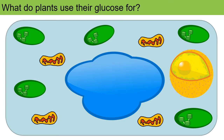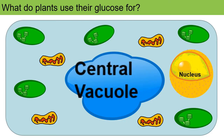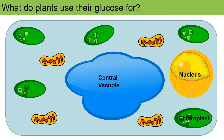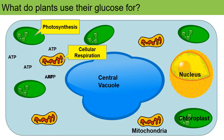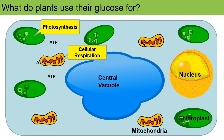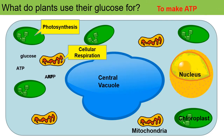What do plants and autotrophs use their glucose for? In a cell, the chloroplast performs photosynthesis and creates glucose, but that glucose goes into the mitochondria. The mitochondria then perform cellular respiration and release a large amount of ATP that the cell can use for its energy needs. So plants make glucose in order to do cellular respiration to produce ATP — and we'll learn more about that in another lesson.